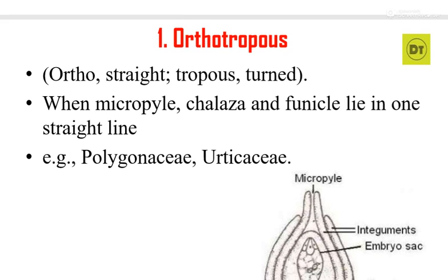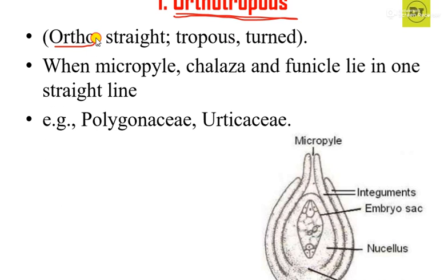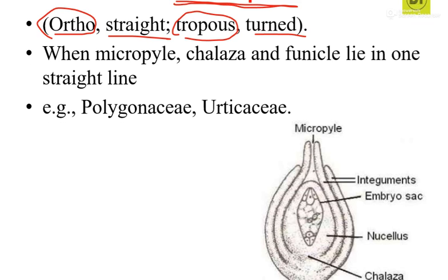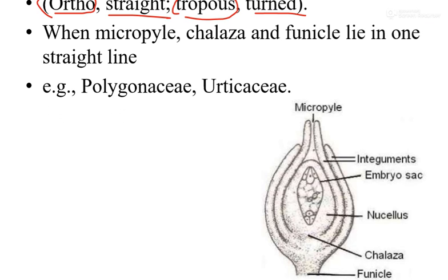The first type of ovule that we will discuss is known as orthotropous type of ovule. The Greek meaning of the term 'ortho' means straight and 'tropous' means turned. Now I hope that you are familiar with the different parts of the ovule or megasporangium, as we have discussed in the earlier video. In this type of ovule, the micropyle, chalaza, and funicle will lie in one straight line.